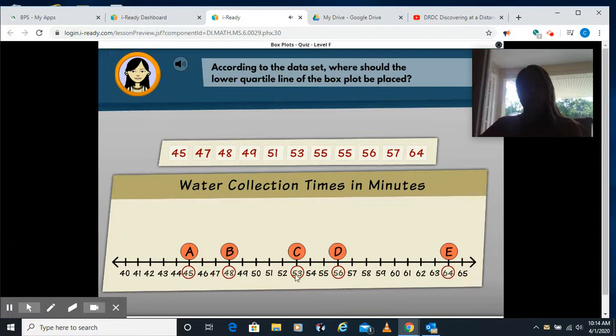So for the lower quartile, we already determined the median is 53, right? Our lowest here is 45, our highest is 64, our lower quartile line is going to go in the middle between the median and our lowest number, so it's going to be the median or the middle of the lower set of data.